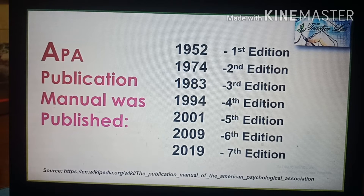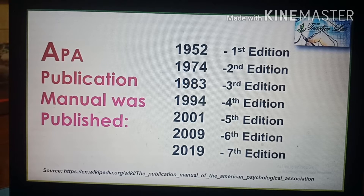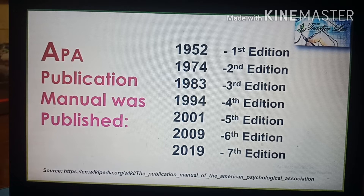The APA Publication Manual was first published in 1952. The second edition followed in 1974, the third in 1983, the fourth in 1994, the fifth in 2001, the sixth in 2009, and the most recent seventh edition was published in October 2019.